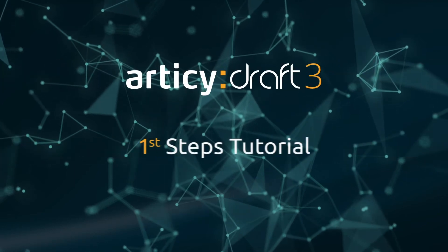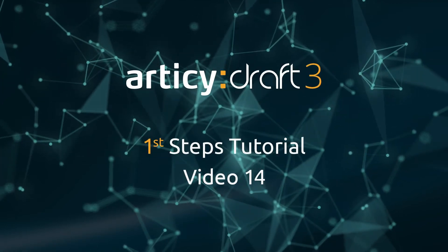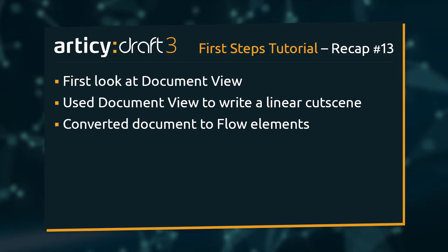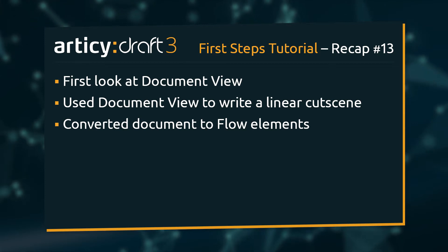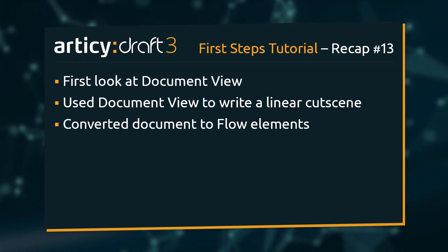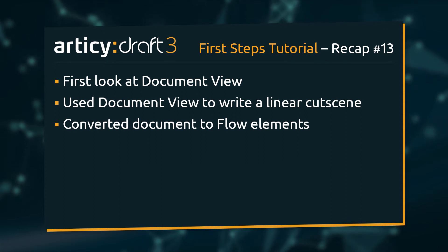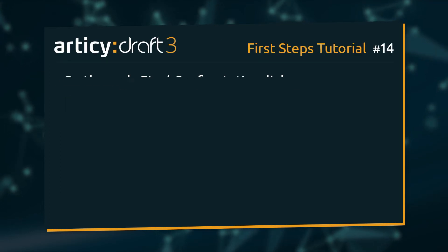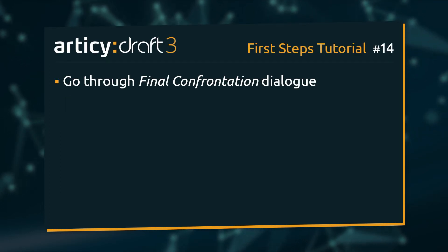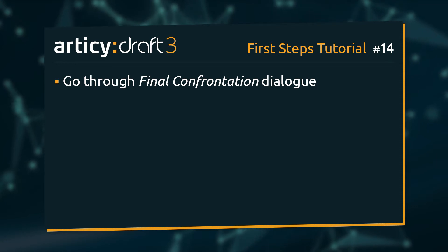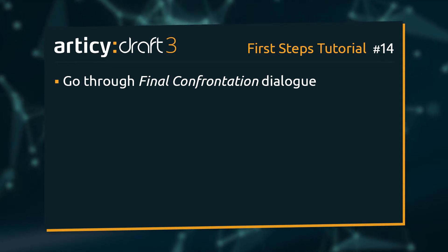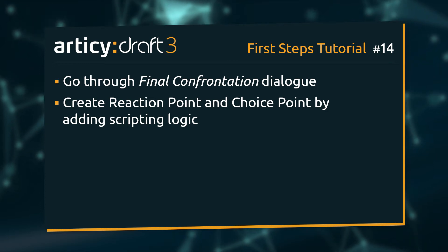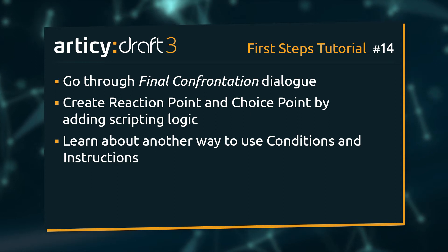Hello and welcome to video 14 of the Articy Draft First Steps tutorial series. In the last video, we visited the document view, saw how documents are structured in Articy, and wrote a linear cutscene that we converted to connected nodes in the flow. In this lesson, we will revisit the flow view and go through the final confrontation dialog step by step, creating reaction points and choice points by adding scripting logic, and learn about another way to use conditions and instructions.